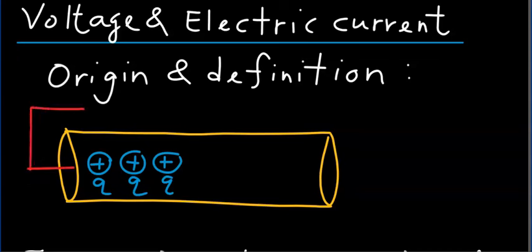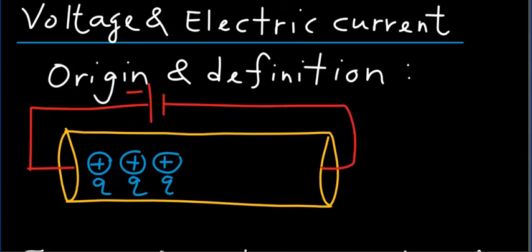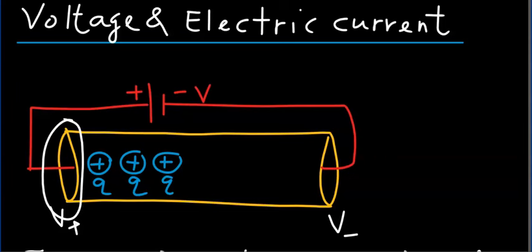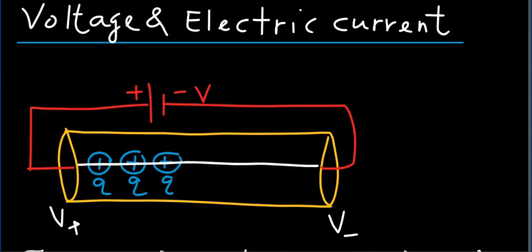Now let's assume that I connect this conductor with a battery. The longer line refers to the positively charged terminal of the battery, and the shorter line is the negative terminal. So let's assume the battery provides a potential difference of capital V. What that means is the left-hand side of the conductor has a potential V+, and the right-hand side has a potential V−, where V+ minus V− equals the potential difference provided by the battery. Since this region has a greater potential than that region, an electric field E will be set up towards the right.